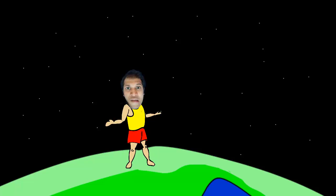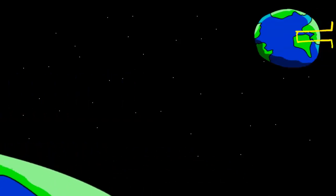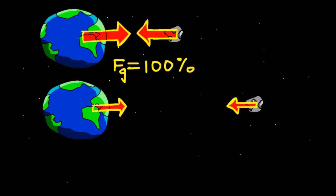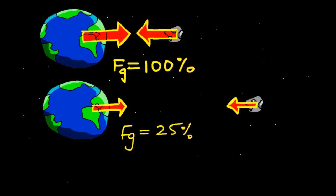Gravity, which is an all-attractive force, becomes weaker as you go farther away from earth. But how much weaker? If you go twice the distance, gravity becomes 4 times smaller. And if you go thrice farther, 9 times smaller, and so on.